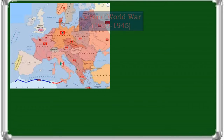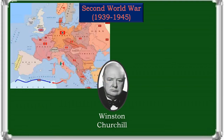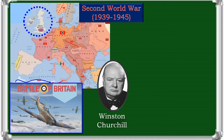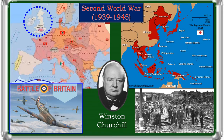Britain entered the Second World War by declaring war on Nazi Germany in 1939, after Germany had invaded Poland. Winston Churchill became prime minister and head of a coalition government in 1940. Despite the defeat of its European allies in the first year of the war, Britain and its empire continued to fight alone against Germany. In 1940, the Royal Air Force defeated the German Luftwaffe in a struggle for control of the skies in the Battle of Britain. Urban areas suffered heavy bombing. Japan declared war on Great Britain on December 8, 1941, after attacking British forces in Southeast Asia. Eventually, both Great Britain and the United States earned hard-fought victories in the Battle of the Atlantic, the North Africa Campaign, and the Burma Campaign. British forces played an important role in the Normandy landings of 1944. The war finally ended when the Germans surrendered on May 7, 1945, and the Japanese surrendered on September 2, 1945.